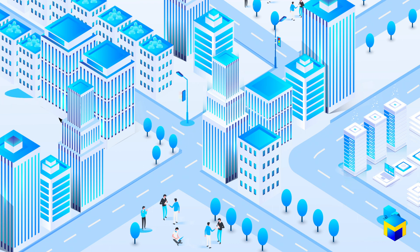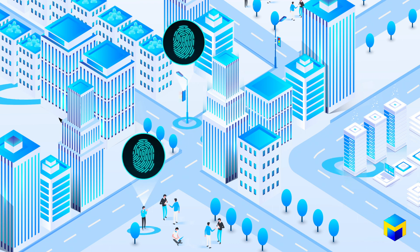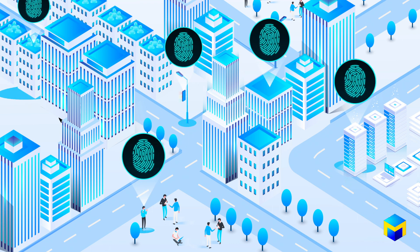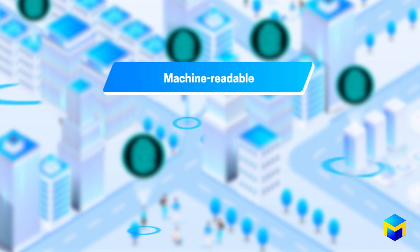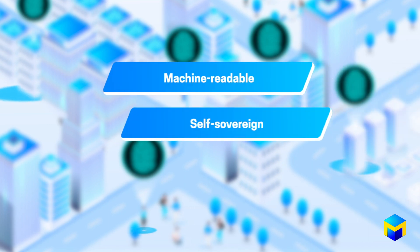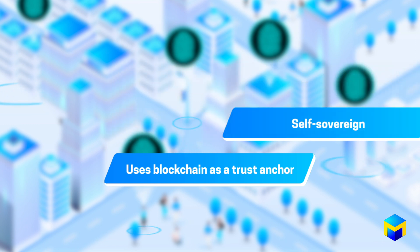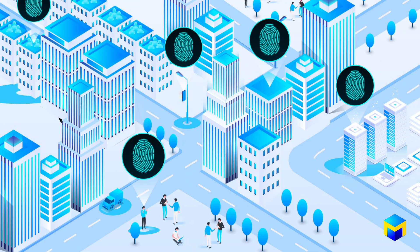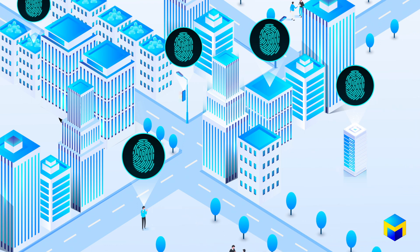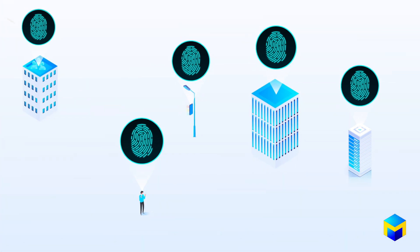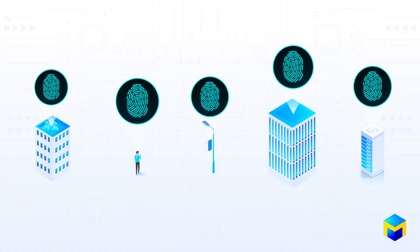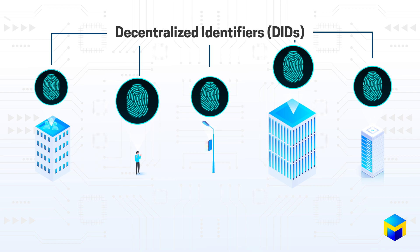These transactions must be supported by a new type of digital identifier — one which is machine readable, self-sovereign, and uses blockchain as a trust anchor to link such entities to relevant attributes, characteristics, and capabilities. These new digital identifiers are known as Decentralized Identifiers, or DIDs.